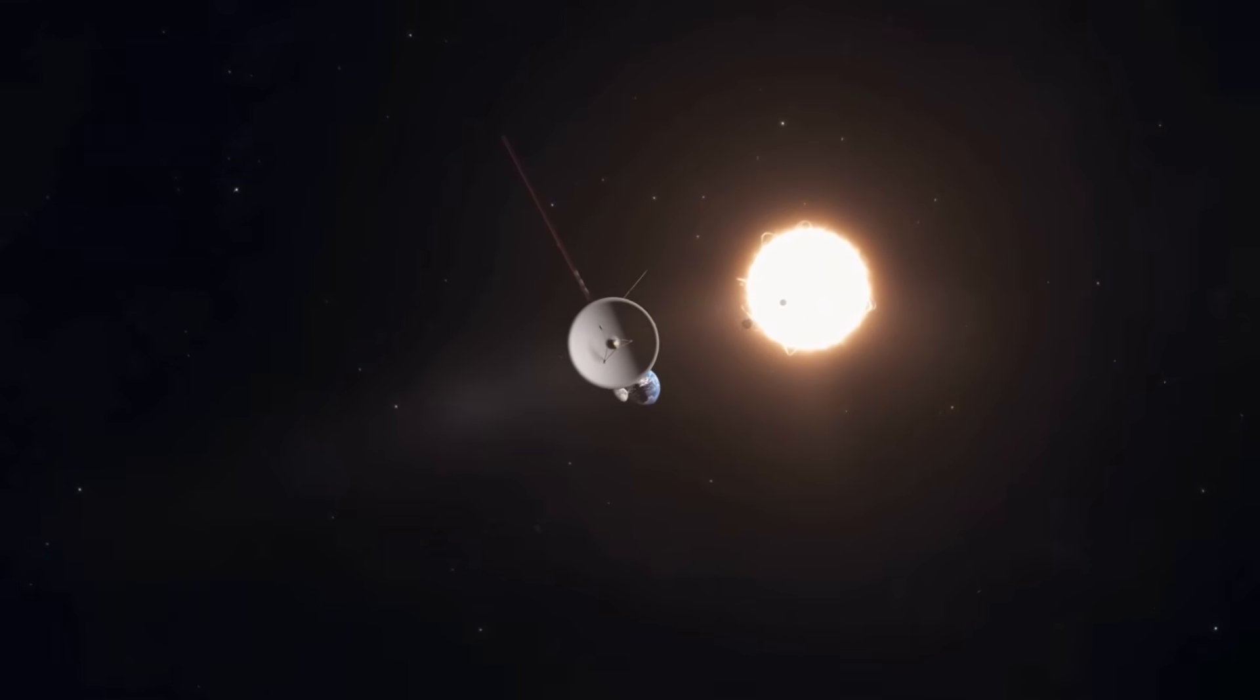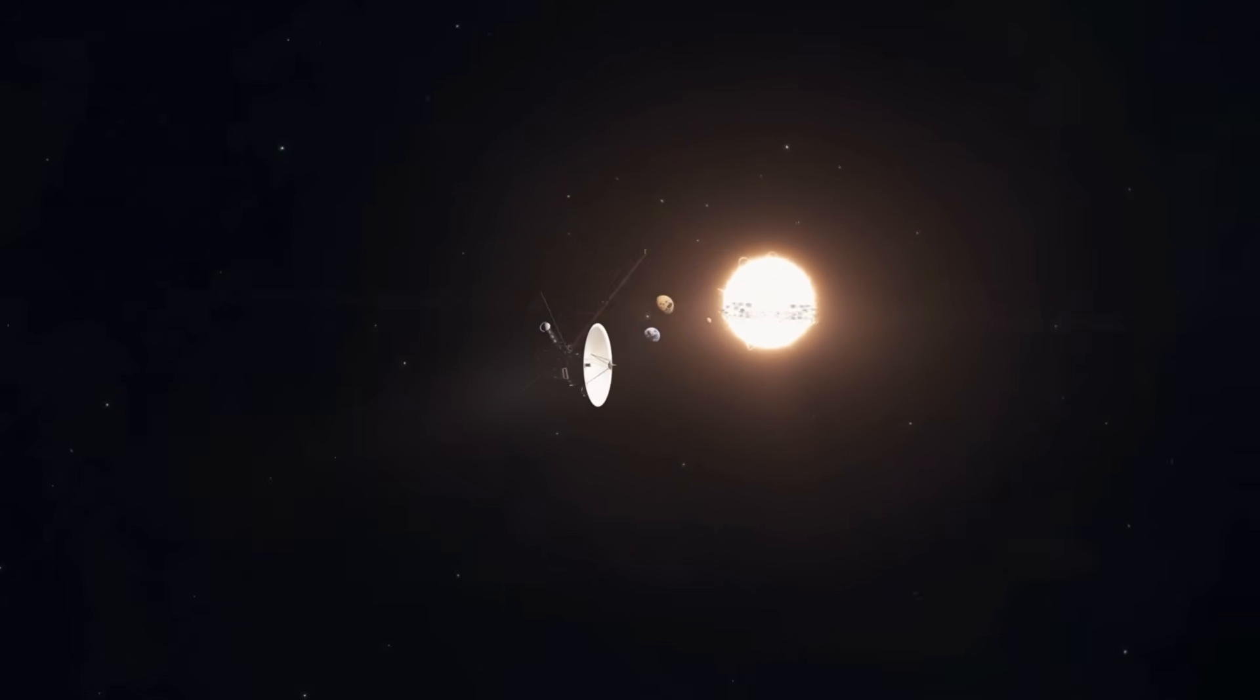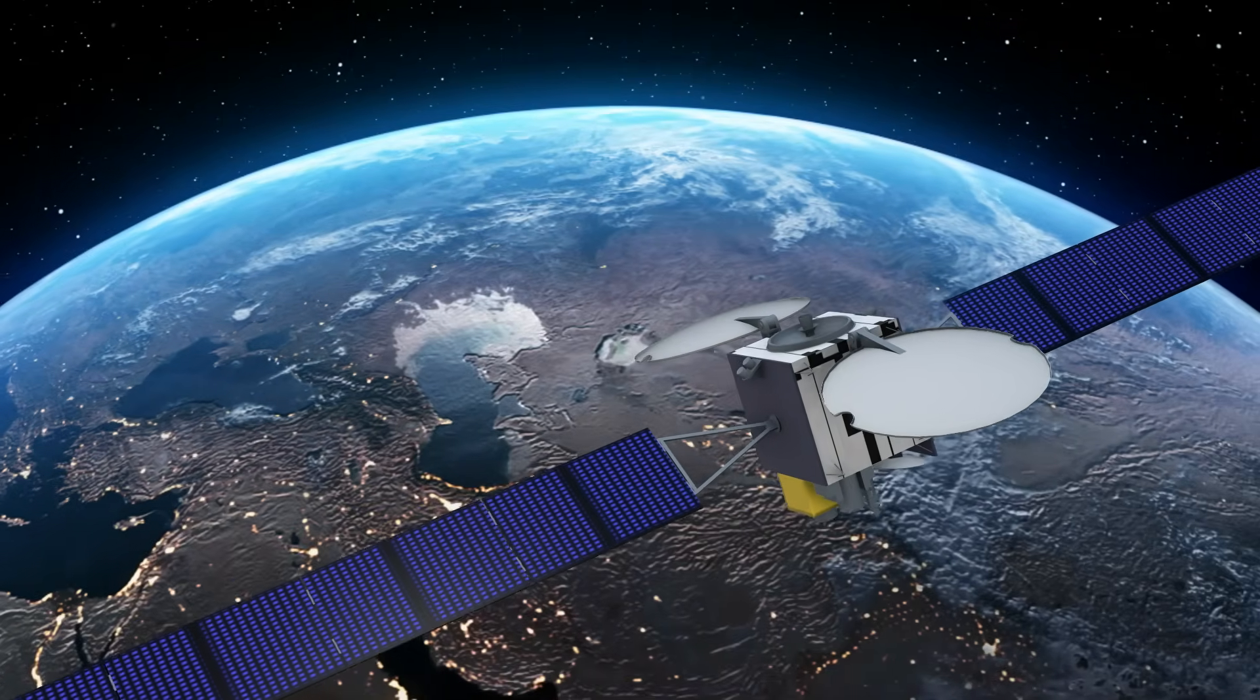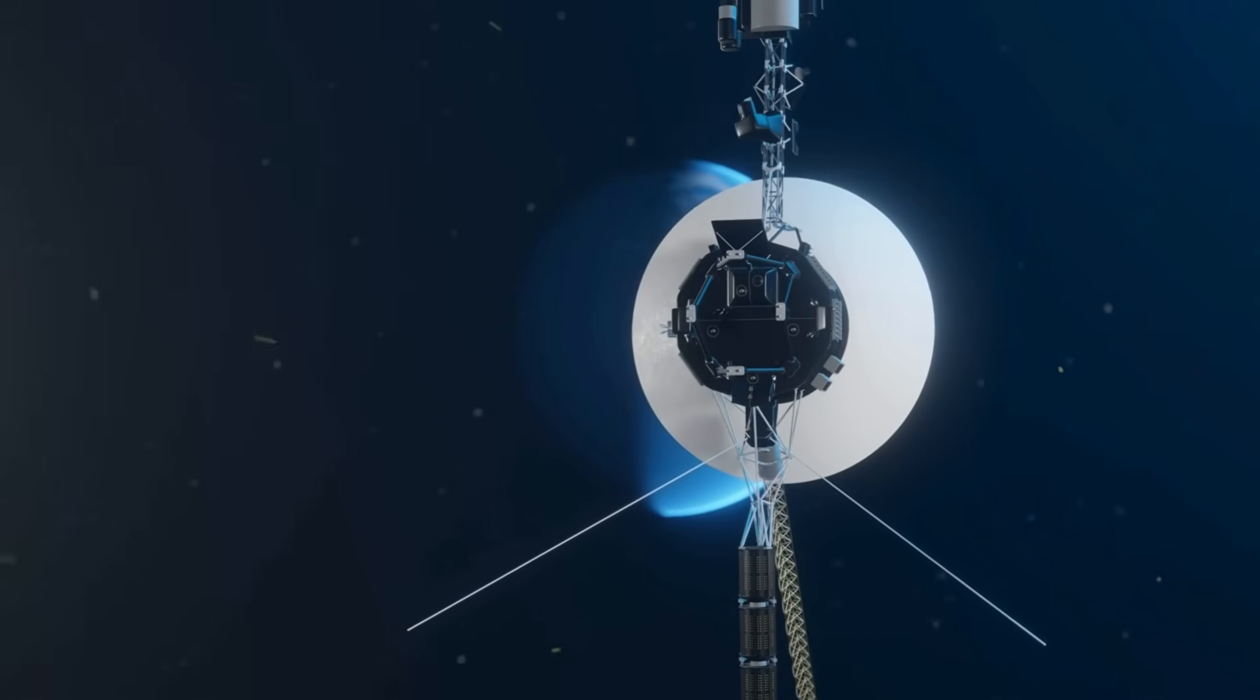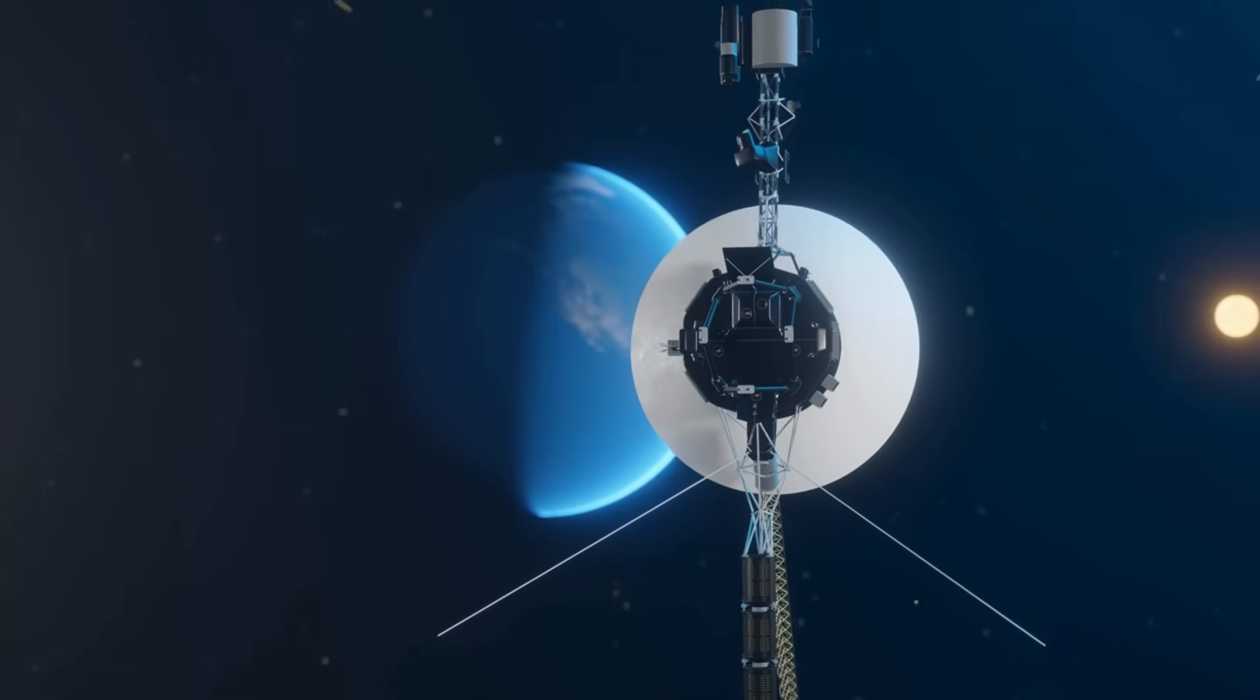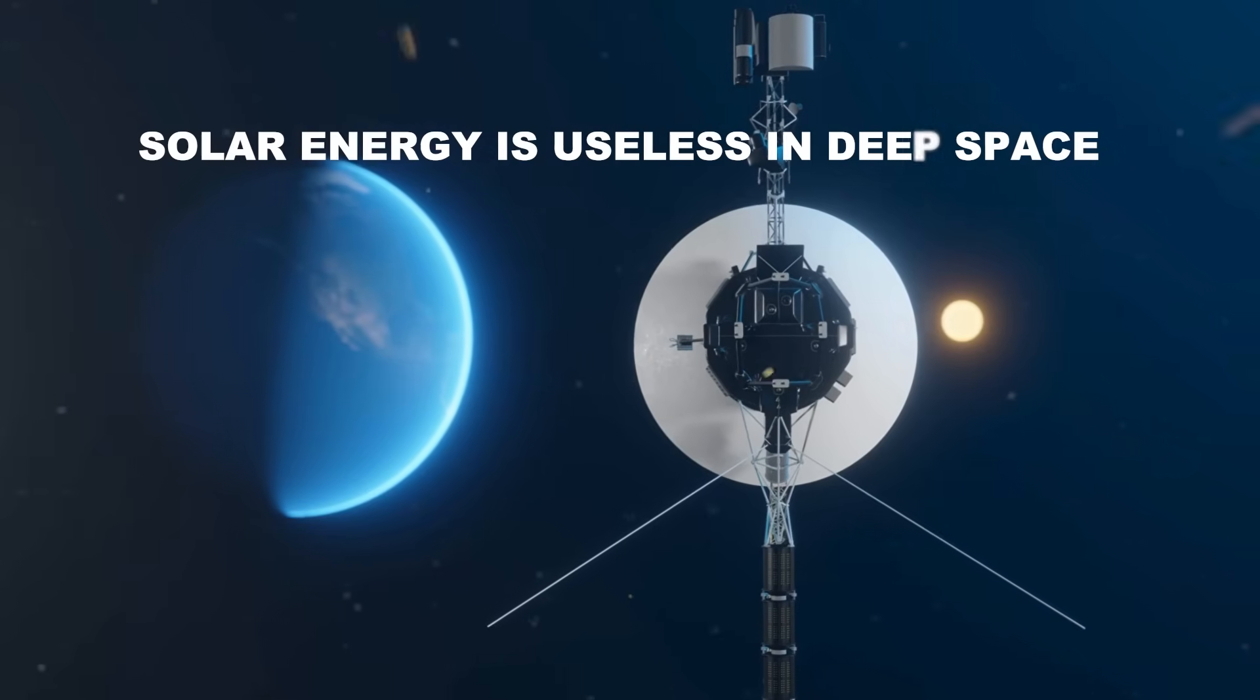The Voyagers use solar panels to supply power. At first glance, this statement seems logical. Today, almost all space probes and satellites use solar panels to generate power, from satellites in Earth orbit to missions to Mars and Jupiter. But for the Voyagers, this would be a recipe for total failure. Why? The reason is simple. Solar energy is useless in deep space.